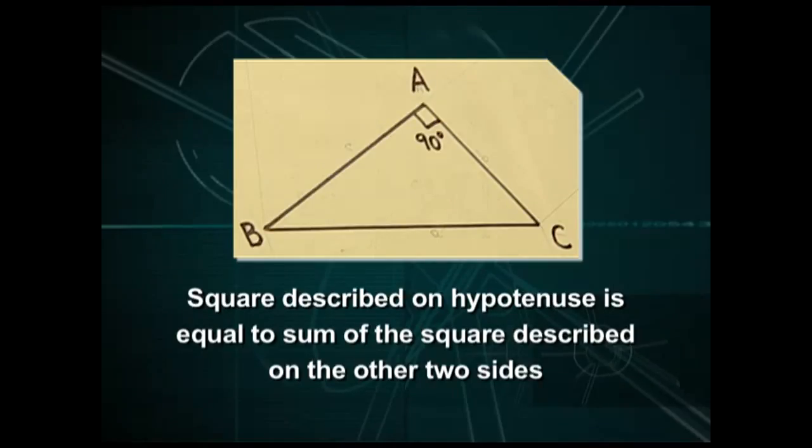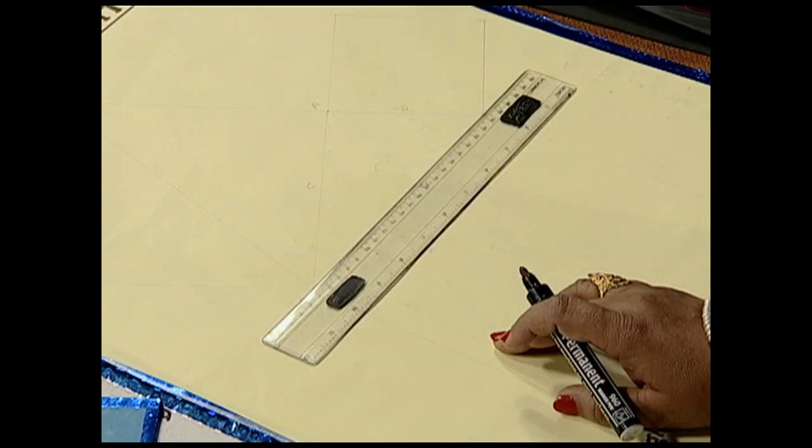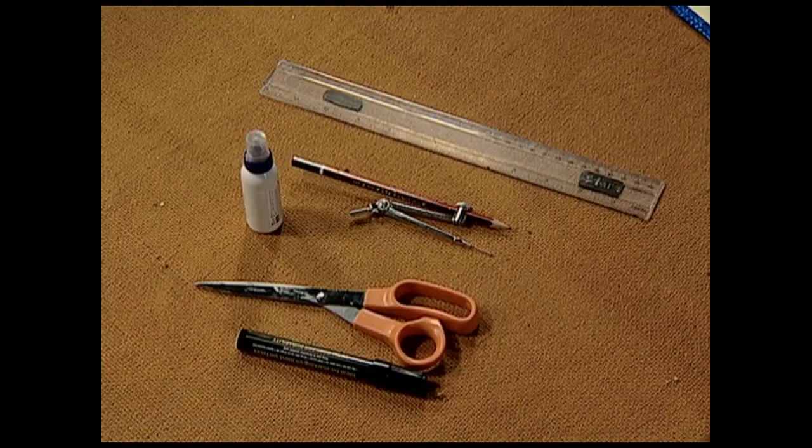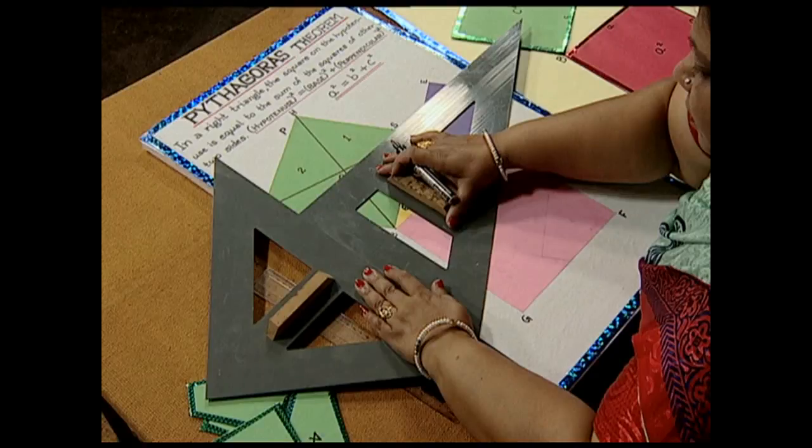For this we require some materials like cardboard, colored chart papers, ruler, pair of scissors, pair of set squares, compass, pencil and eraser.